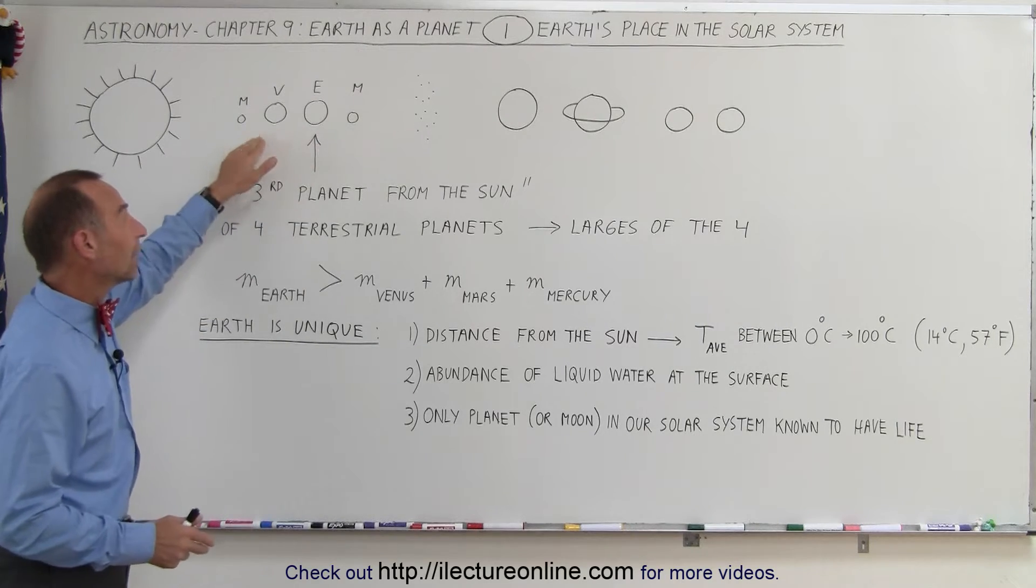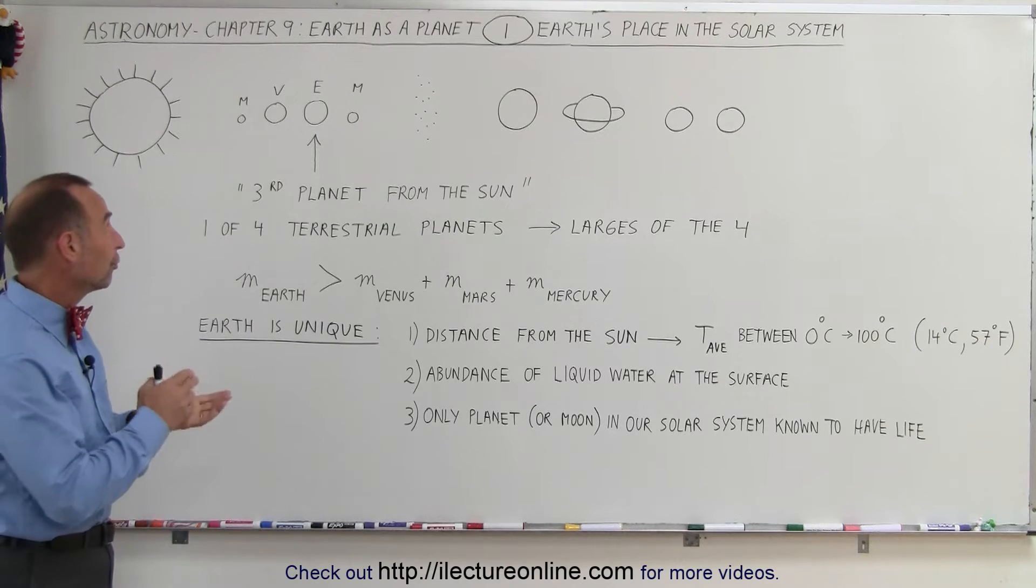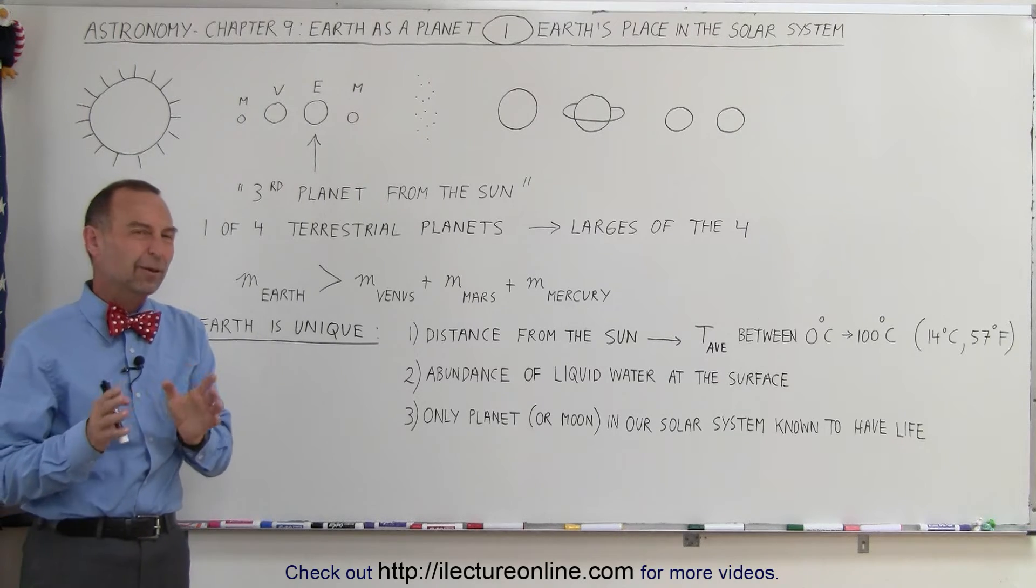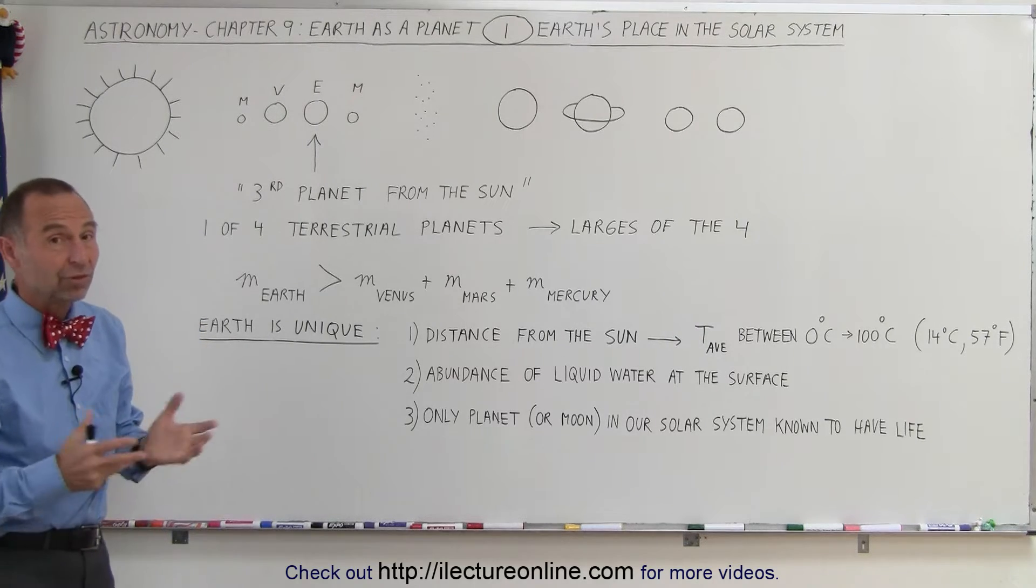Now, the four terrestrial planets, they're primarily made out of rock and metal. For Earth, Venus and Mercury, or especially for Earth and Venus, it's about half metal and half rock, which is amazing.